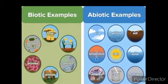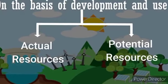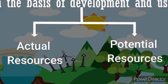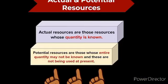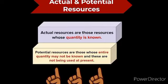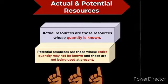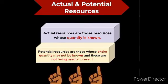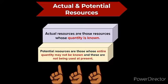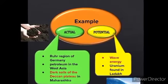On the basis of development and use, resources are classified as actual and potential resources. Actual resources are those whose quantity is known — for example, coal deposits in the Damudar Valley of India. Potential resources are those whose entire quantity may not be known and may possibly be developed in the near future — for example, wave energy.